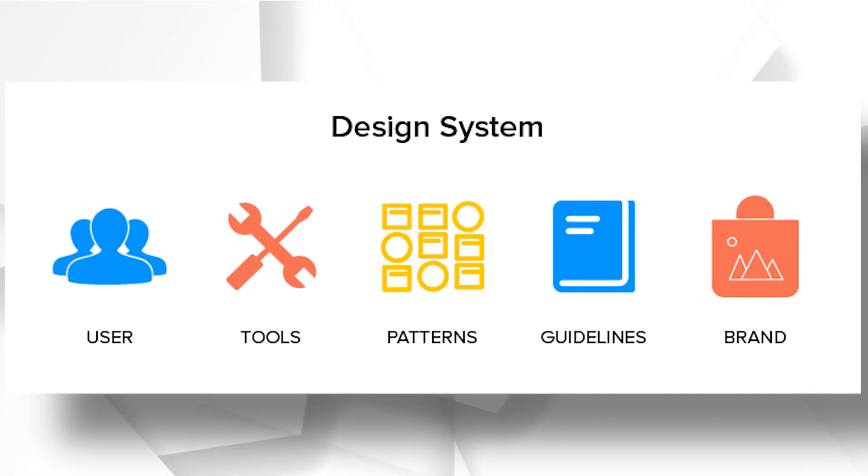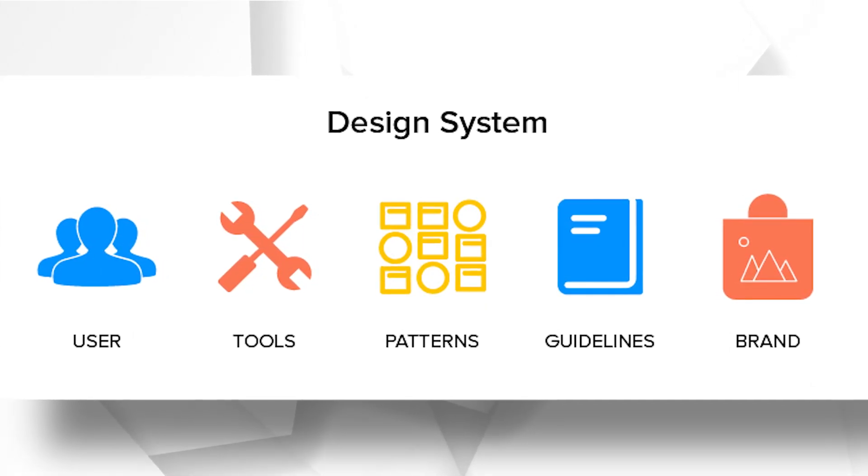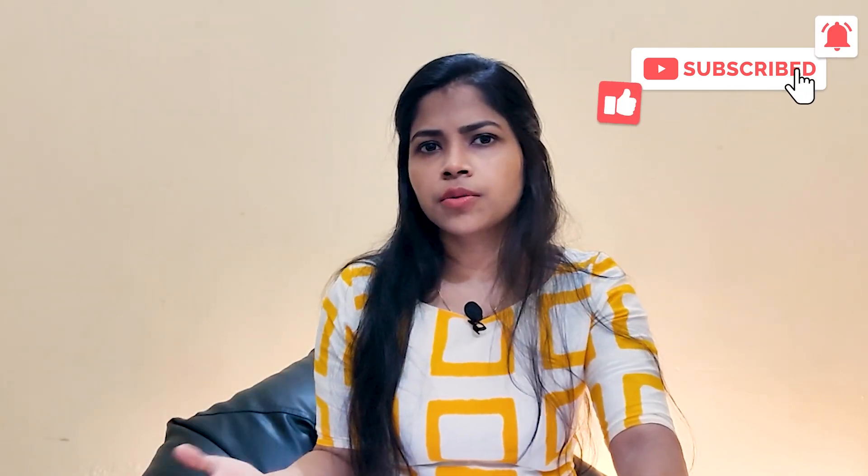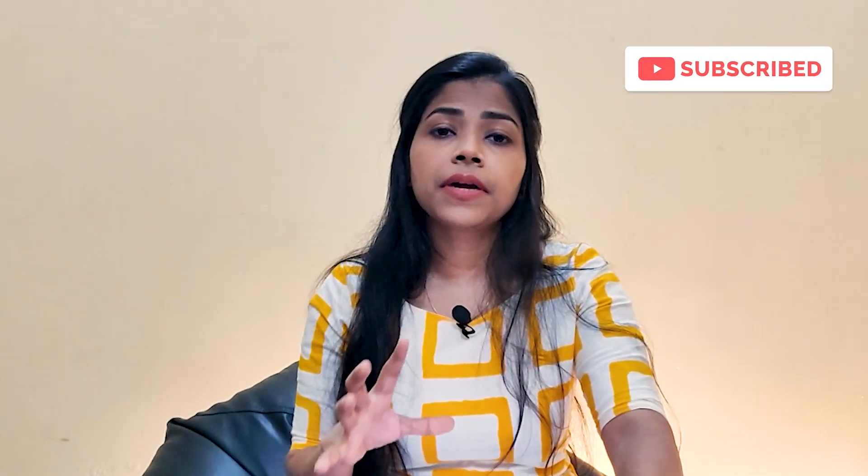Let's get into the video. A design system is a complete set of design standards - there are all components for design. Let's say there are products like Amazon, Facebook, Instagram. These products are going to be long-term. If you are working in a company, this product will exist long-term and will be updated. We are going to work on it with future scope, so we create a style guide and a design system.